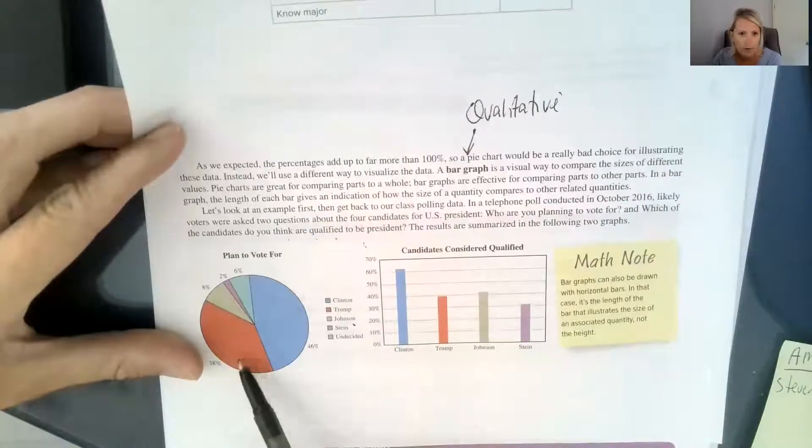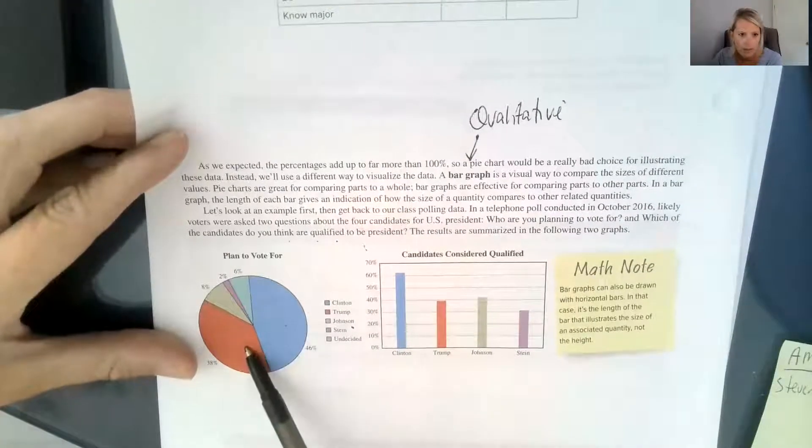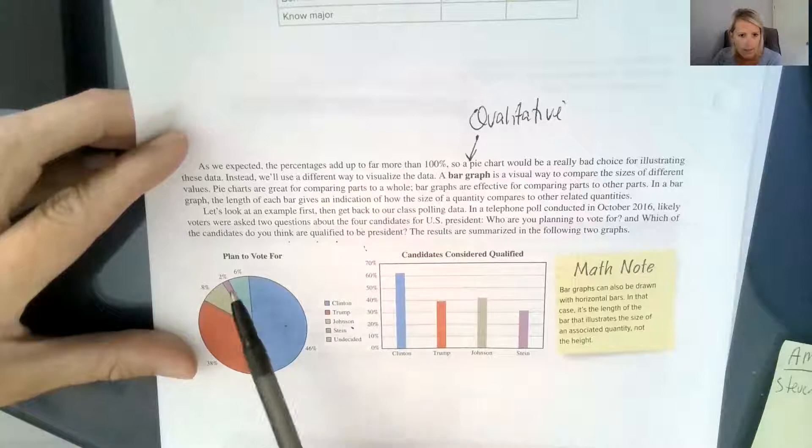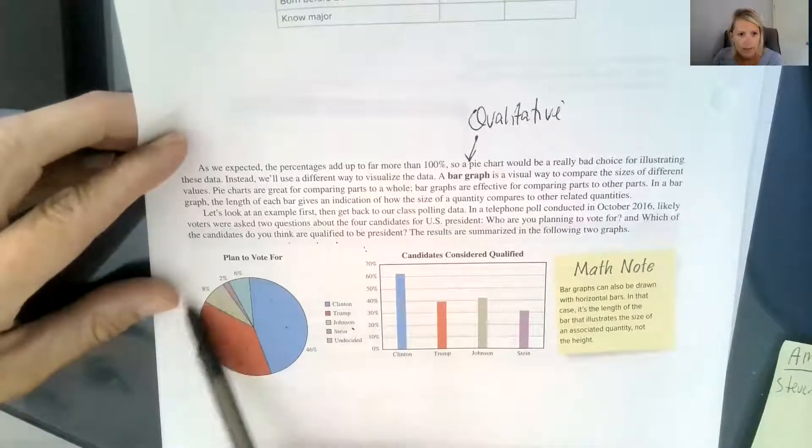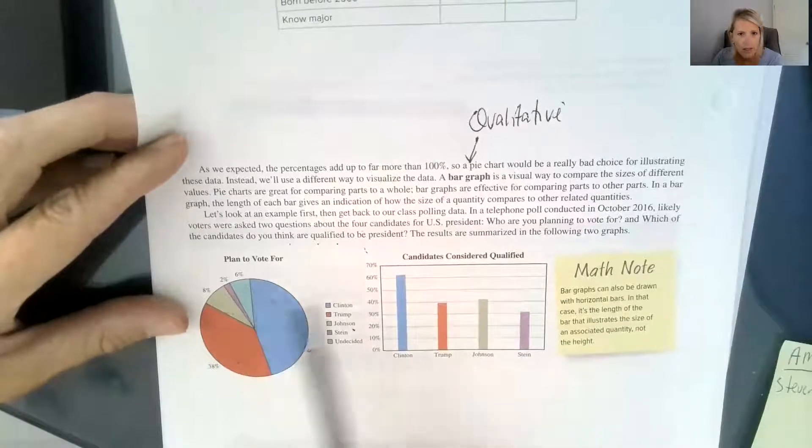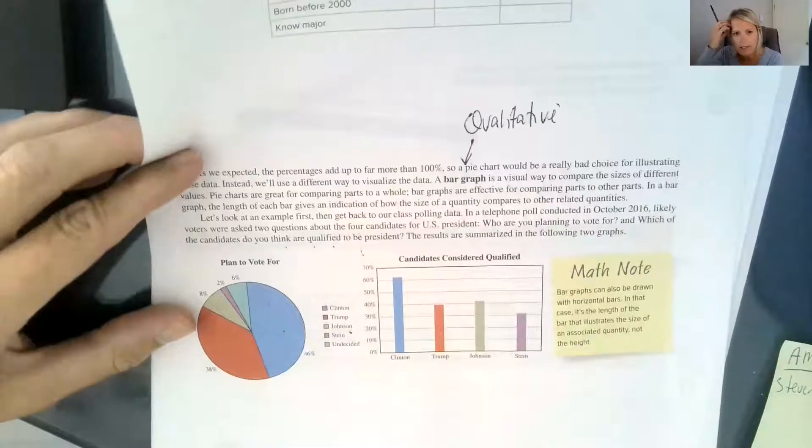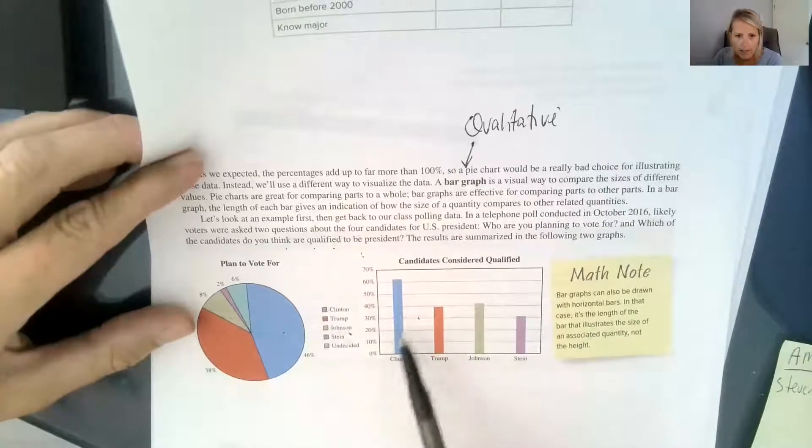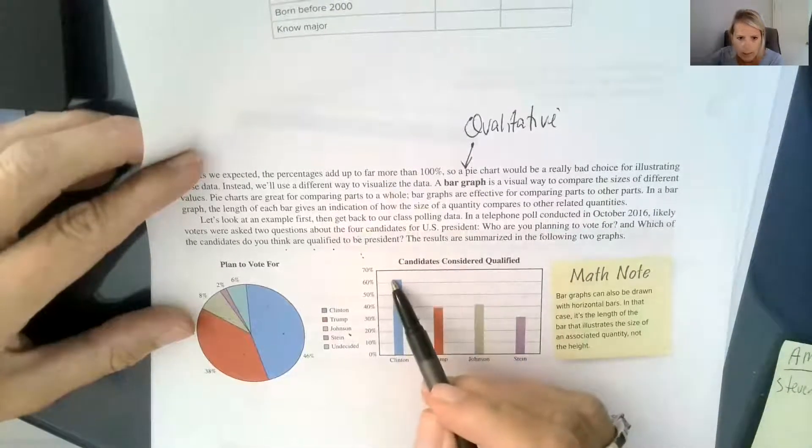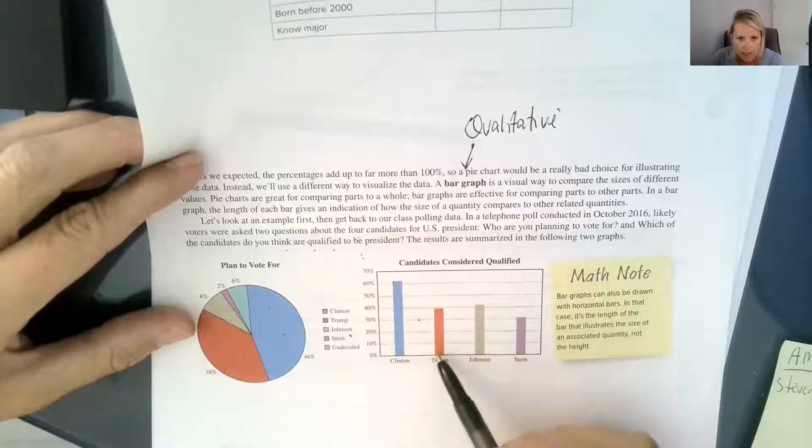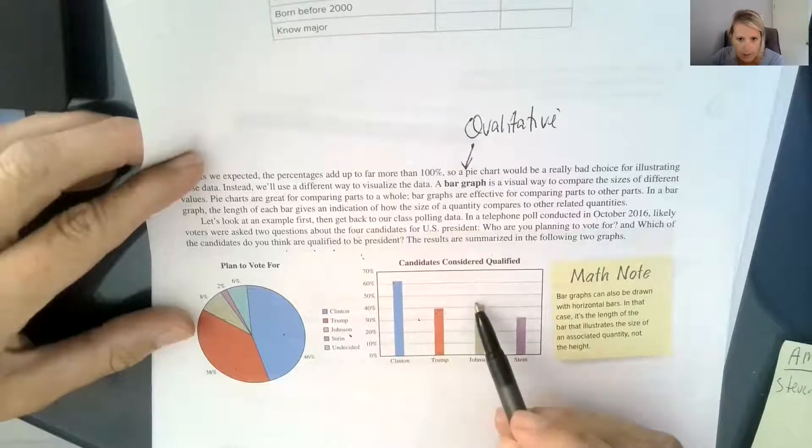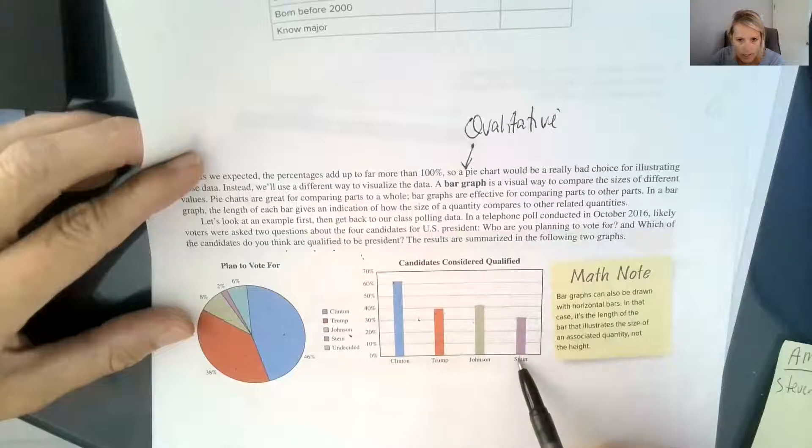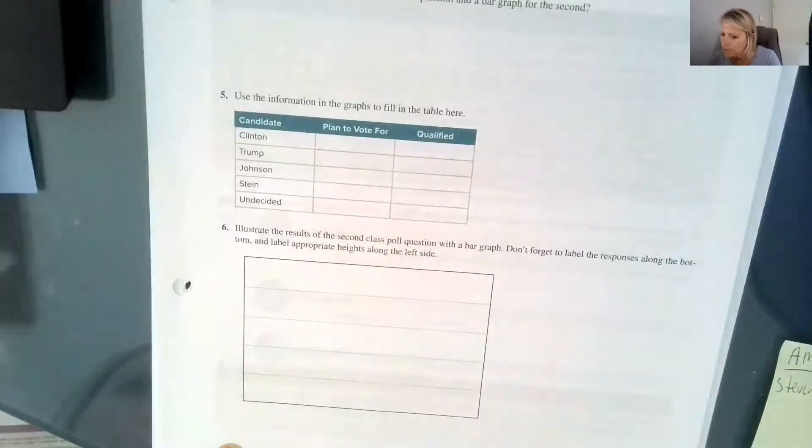So this is who they plan to vote for. There was blue for Clinton, Trump, Johnson, Stein and undecided. And you can see that the percentages add up to be 100. And then they said, who do you think is qualified to be president? And so they had Clinton and would have to do some estimating here is just about 60%. And Trump was just under 40%. Johnson was just over 40%, and Stein was just over 30%.